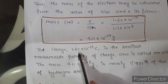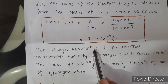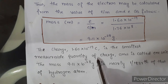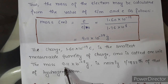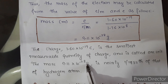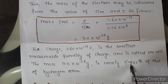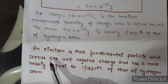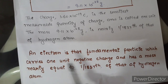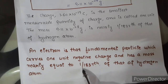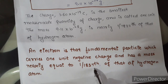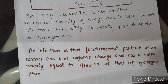The charge of 1.6 × 10⁻¹⁹ coulombs is the smallest measurable quantity of charge and is called 1 unit. The mass of 9.1 × 10⁻²⁸ gram is nearly 1/1837th of the hydrogen atom. From here we can define the electron as the fundamental particle which carries 1 unit negative charge and has a mass nearly equal to 1/1837th of that of the hydrogen atom. This is all about the discovery of electron.